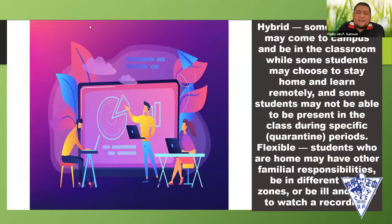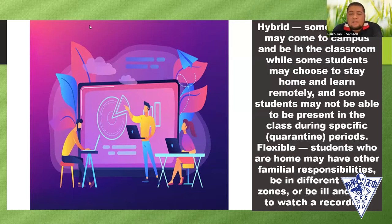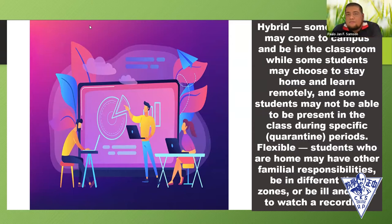For the hybrid component: some students may come to campus and be in the classroom, while others may choose to stay home and learn remotely. Some students may not be able to be present in class during a specific quarantine period — we can't deny that. There's a probability we could go back to quarantine again at level two or three, so that possibility exists.